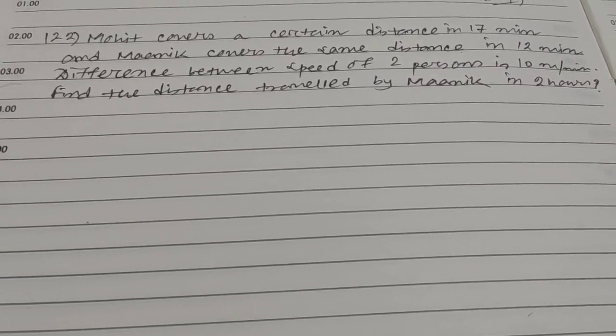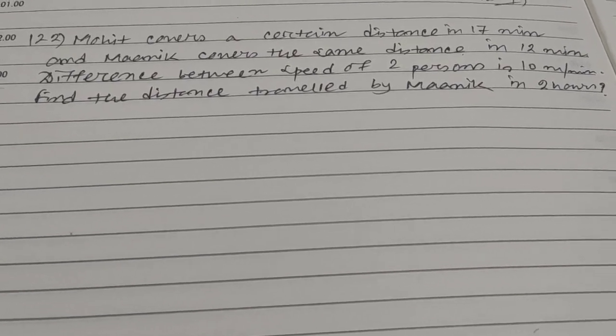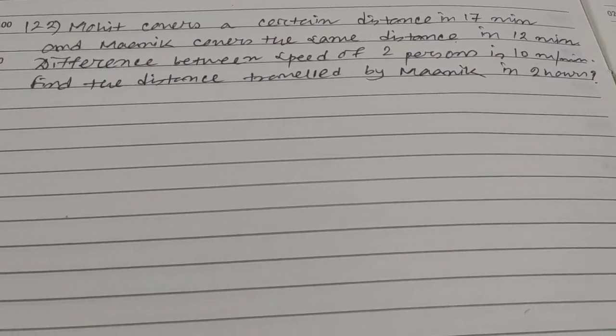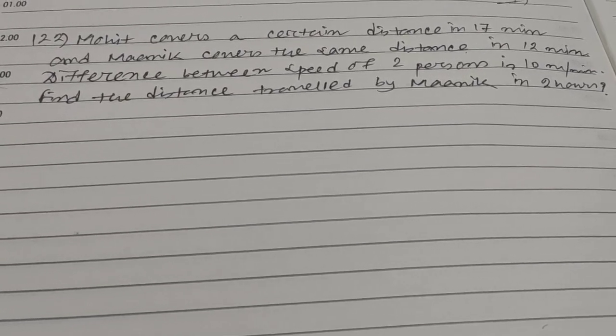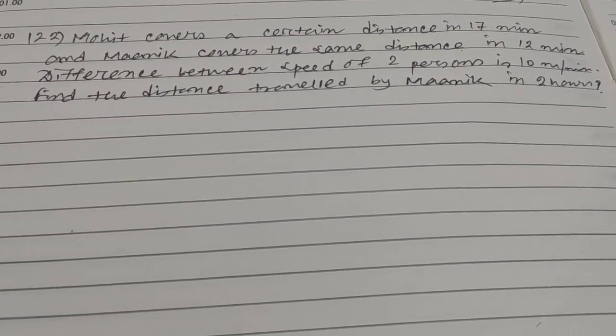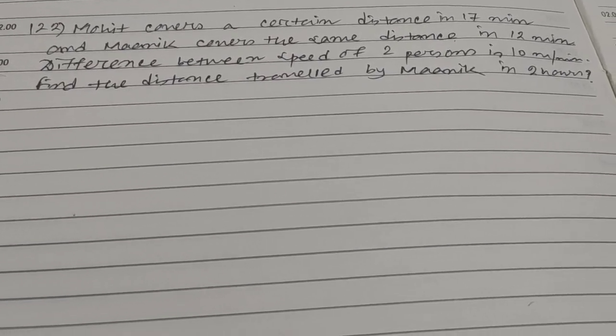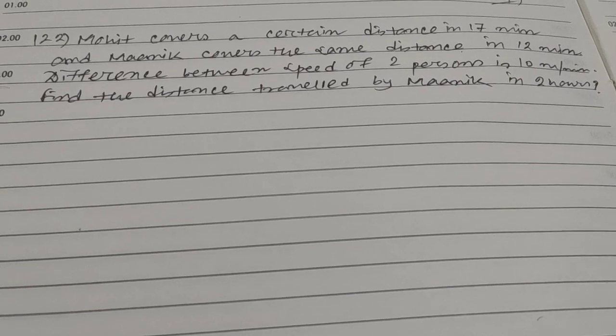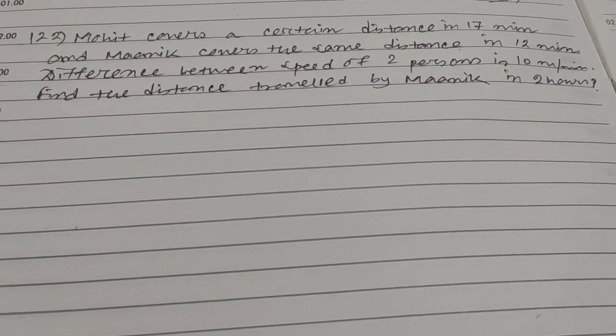Hi friends and students, this is question number 122 for the Freka Apti and Quant series. The question is: Mohit covers a certain distance in 17 minutes and Manik covers the same distance in 12 minutes. The difference between the speed of the two persons is 10 meters per minute, and you need to find the distance traveled by Manik in two hours.